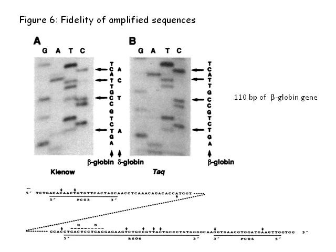A 100 base pair region of a single-copy beta-globin gene was sequenced after PCR amplification with both Klenow and Taq. In the sequencing result of the product synthesized by Klenow, two nucleotides were detected at certain positions for unclear reasons. However, the sequence of the product amplified by Taq is clearly readable. This may be because Klenow amplifies products non-specifically, thereby synthesizing delta-globin present in the genome instead of beta-globin. Delta-globin is highly related to beta-globin, and only a few nucleotides differ between the two, with the differences indicated by downward arrows in the sequence. This experiment demonstrated that Taq has higher specificity in amplification than Klenow.